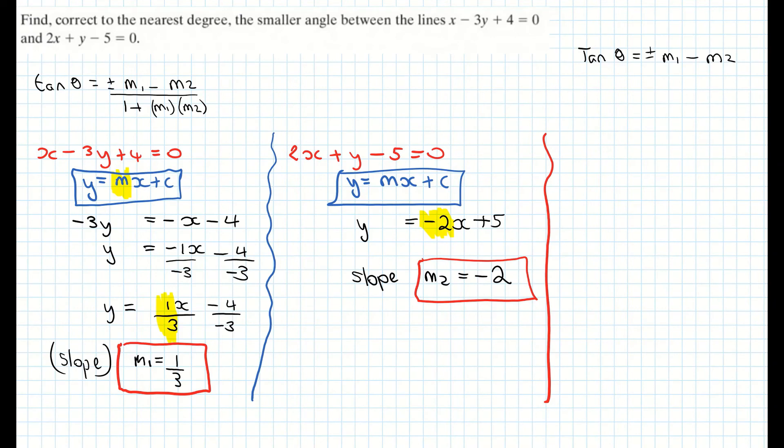So my formula is tan theta is equal to plus or minus M1 minus M2 all over 1 plus M1 times M2.